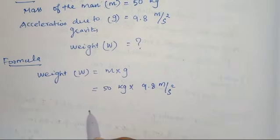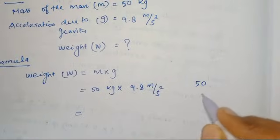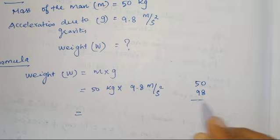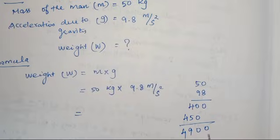Let me multiply. 50 into 9.8. 50, 98. I can multiply over here. 0, 8, 5 or 40. Again 0, 9, 5 or 45. 0, 0, 9, 4. Our point is there. After one digit I can keep the point. The answer is 490.